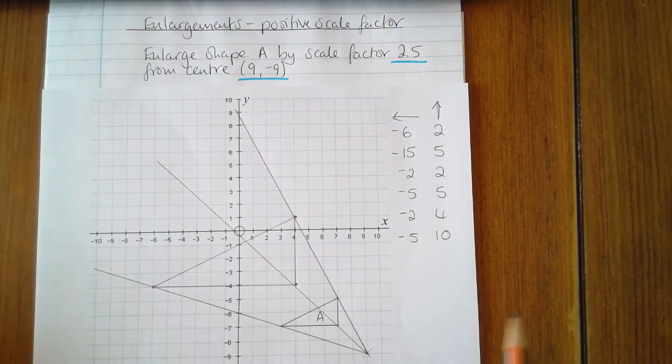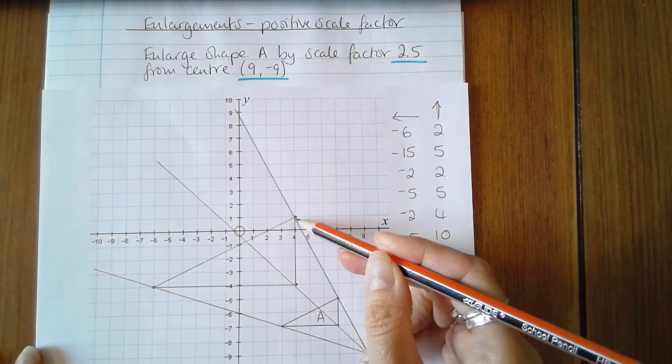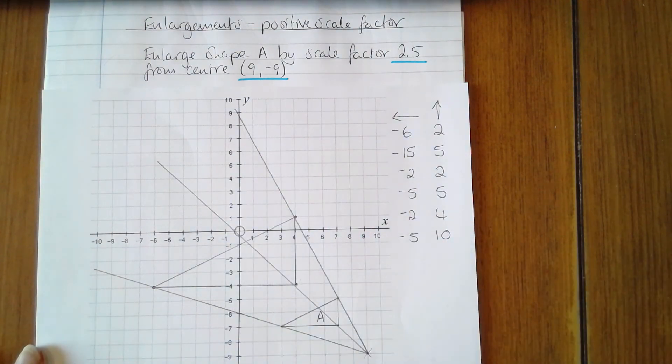This length here is 4 - if we multiply that by 2.5 we'll get 10, so let's check: yes, that's 10. And this is 2, multiply that by 2.5 and we should have 5 - and that's correct. It looks like it's just sliding along the grid lines, so I'm confident that that's correct.